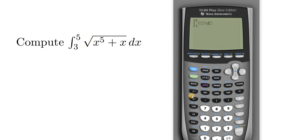So the square root function is a blue key, so you have to hit second first in order to access it. So second x squared, then we have x to the fifth.